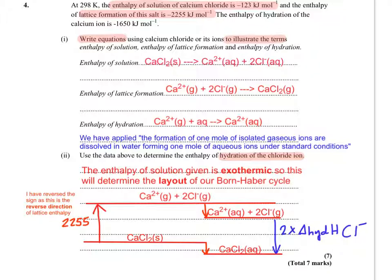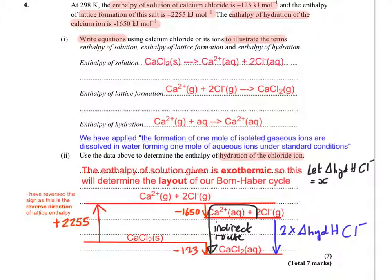So the enthalpy of hydration of the calcium ion is minus 1650. That goes up in the top right. And the enthalpy of solution is minus 123. So that goes down at the bottom. So now we have all the components to work out our indirect route. So it looks something like that. So if you let the hydration enthalpy of the chloride ion be x, we can now treat it as 2x and then solve for it.